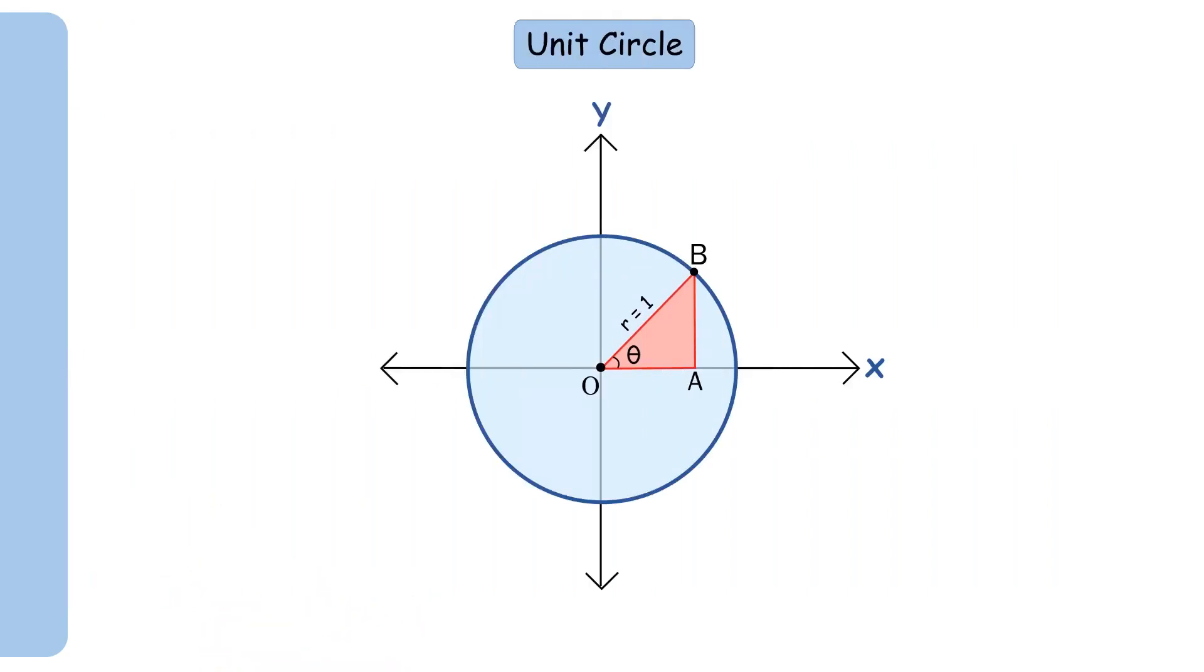Now, draw a line tangent to the unit circle where the hypotenuse touches the unit circle. Extend this tangent line to the x-axis. Let this point be C. The distance of this line segment from its tangent point on the unit circle to the x-axis, i.e. BC, is the tangent or tan theta.